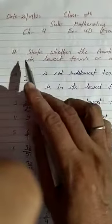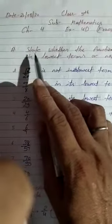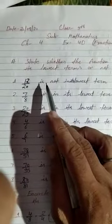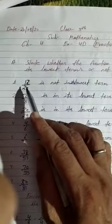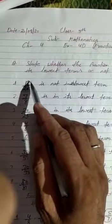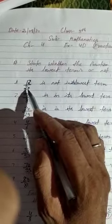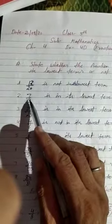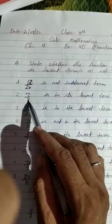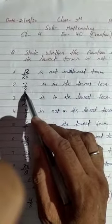First question of this exercise is: state whether the fraction is in lowest terms or not. We need to check if the fraction is in lowest terms. First fraction is 12 upon 20. There is a common factor between 12 and 20, so it is not in lowest terms. 7 upon 8 - there is no common factor between 7 and 8 except 1, so it is in its lowest term.